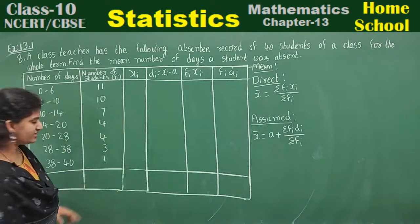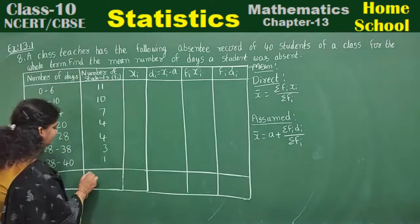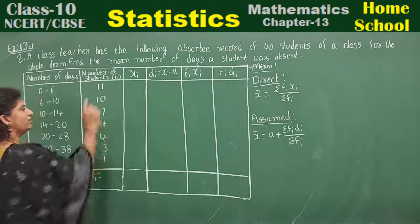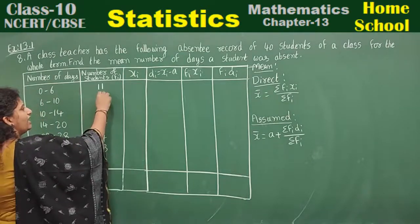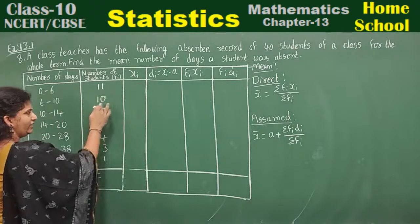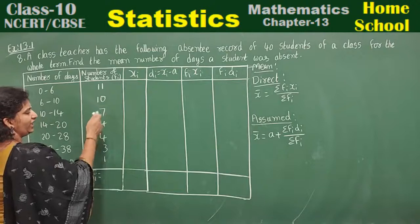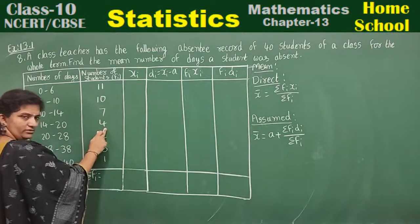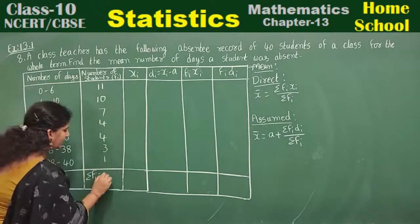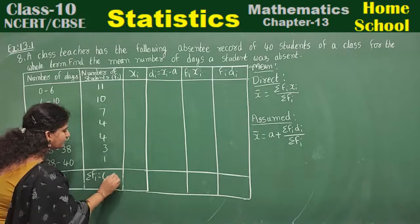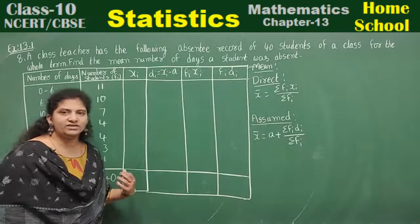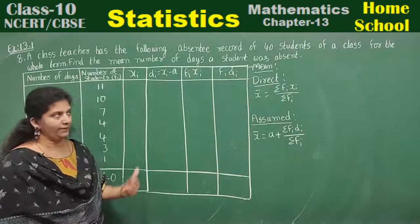Add the frequencies to get summation fi. 11 plus 10 is 21; 21 plus 7 is 28; then 32, 36, 39, 40. Summation fi value is 40.